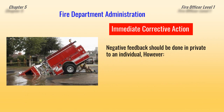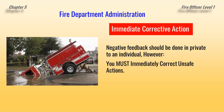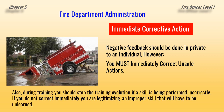We also talk about immediate corrective action — sometimes you can't wait, stuff has to be done right away. Negative feedback should be done in private to an individual. However, you must correct unsafe actions immediately. That's even on the fire ground and on the training ground. If something is not being done correctly or safely, it has to be stopped. During training, you should stop the training evolution if a skill is being performed incorrectly. I like to say: if you don't correct it immediately, you are legitimizing that improper skill, and then you'll have to unlearn it.